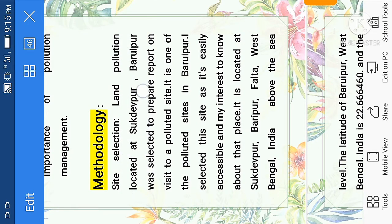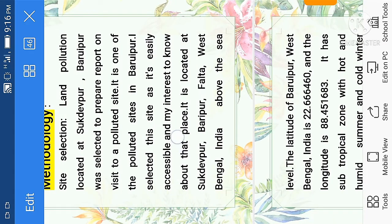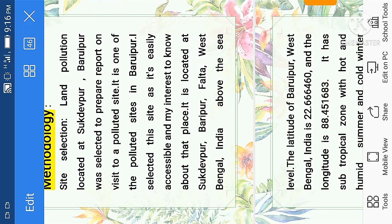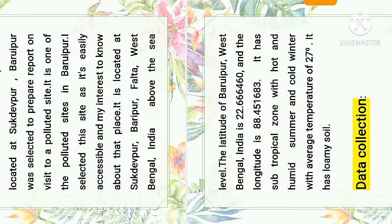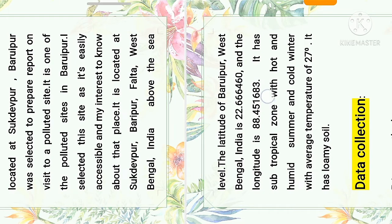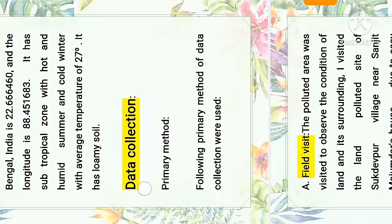Methodology — site selection: a land pollution site located at Sukdebpur, Baruipur, West Bengal was selected to prepare a report on a visit to a polluted site. It is one of the polluted sites in Baruipur. I selected this site as it is easily accessible and I have an interest to know about the place. It is located at Sukdebpur, Baruipur, Falta, West Bengal, India. The latitude of Baruipur is 22.666460 and the longitude is 88.451683. It has a subtropical zone with hot and humid summers and cold winters, with an average temperature of 27 degrees, and has low soil.